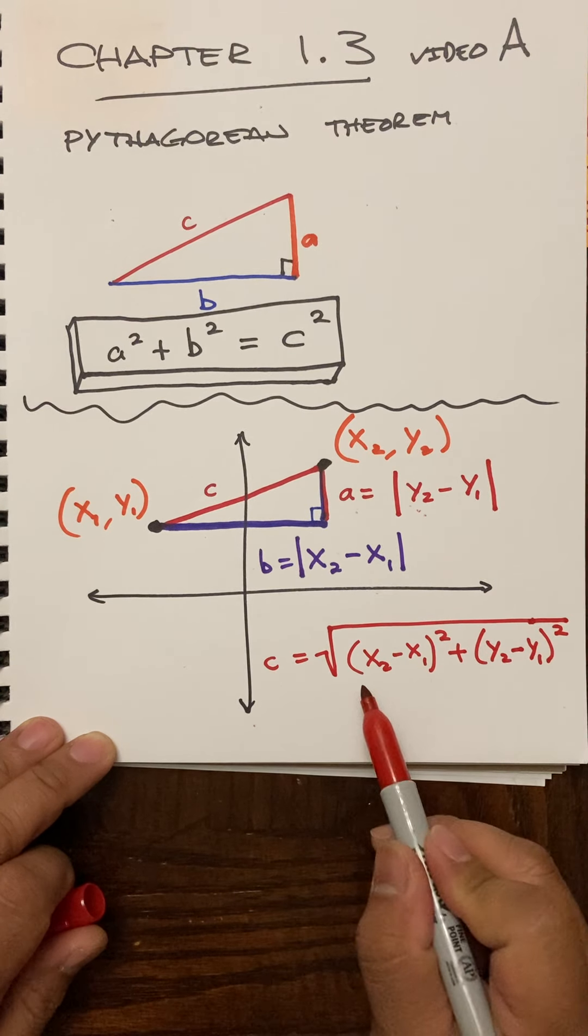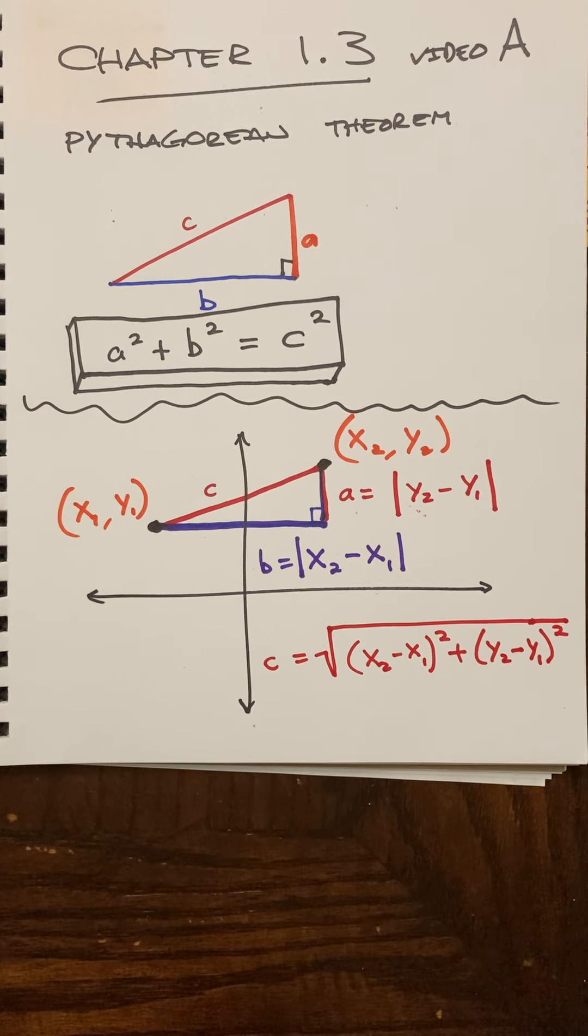And you'll notice I use parentheses here instead of the absolute value bars. I can go either way, the square will actually take care of the positivity of that value. Okay, so we're going to use this a few times in the next example.